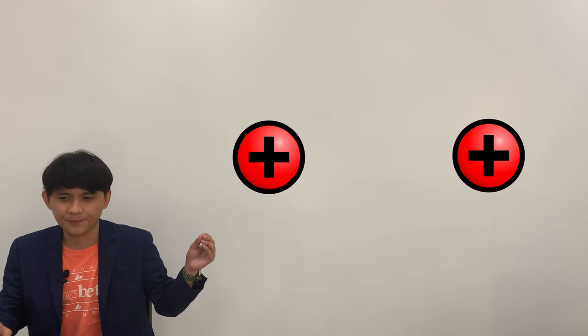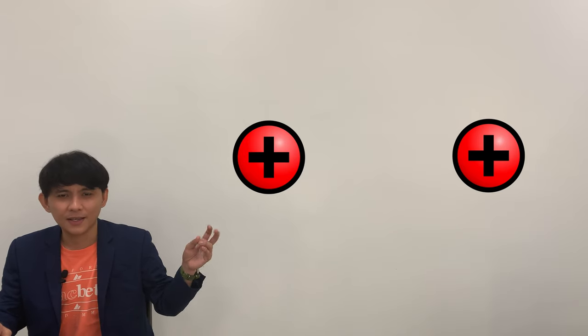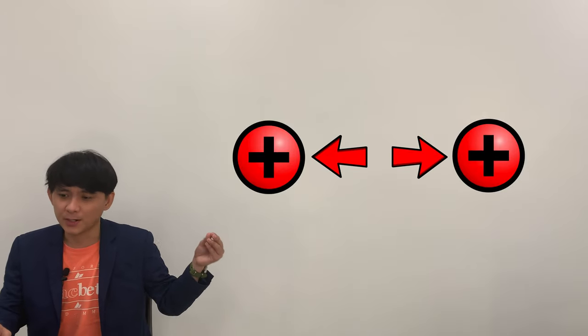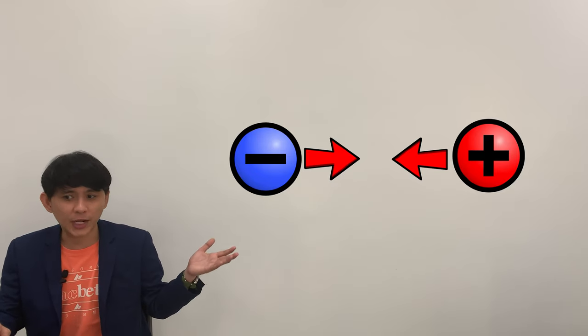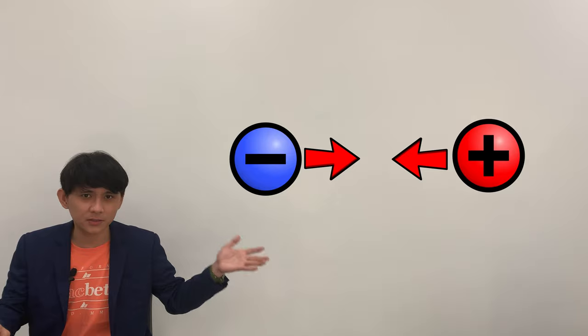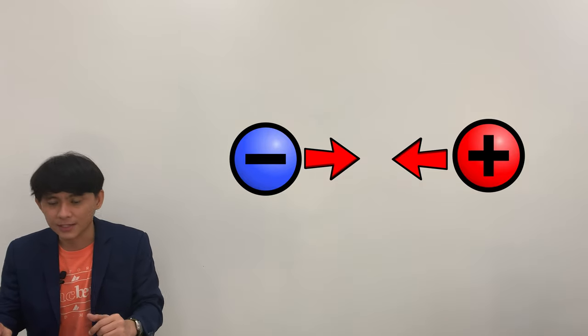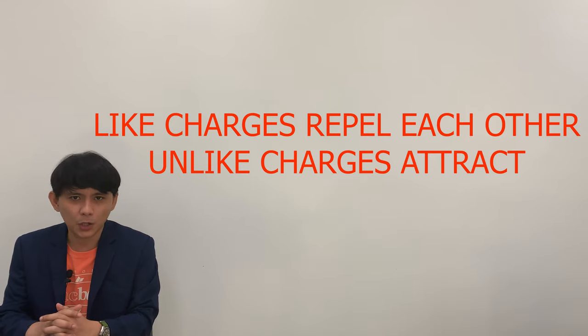Take this charged particle for example. If you put this together with another charged particle, what will happen? These two will repel because they have the same charge. How about this? What will happen? In fact, these two will attract each other because one is positive and the other is negative. And that is the basic law of attraction and repulsion.